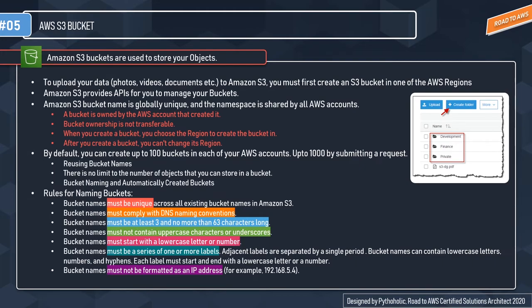By default, you can create up to 100 buckets in each AWS account, extendable up to 1000 by submitting a request to AWS. Regarding reusing bucket names: you can delete a bucket only if it is empty, and after deletion the name becomes available for reuse. However, after you delete a bucket, there may be a window where someone else creates a bucket with the same name, preventing you from reusing it. AWS recommends you should not delete the bucket. There is no limit on the number of objects you can store in a bucket.